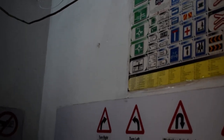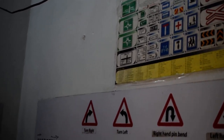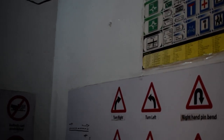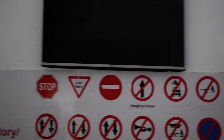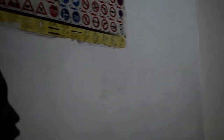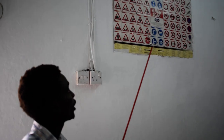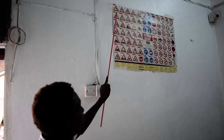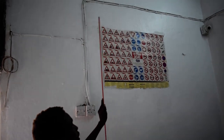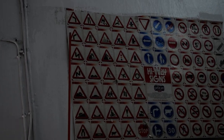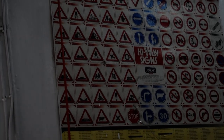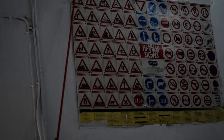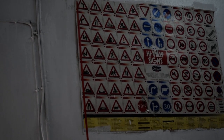So whenever you have traffic signs, rectangular shapes, they are giving information. Informatory signs are always in rectangular shape. Triangular shape gives us a warning. So triangular shape with apex facing upwards, we have number one sign.